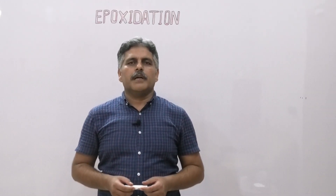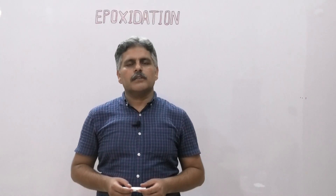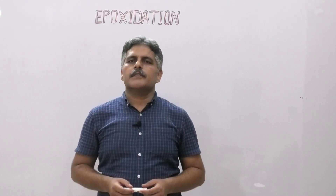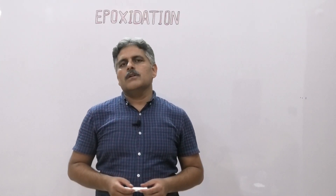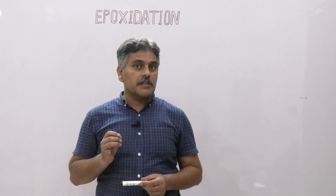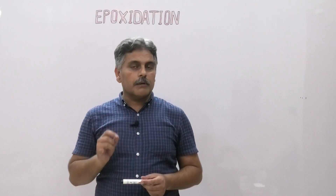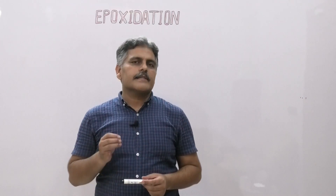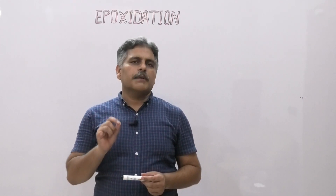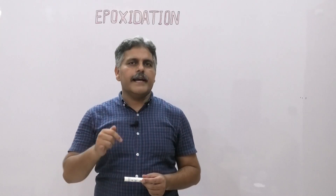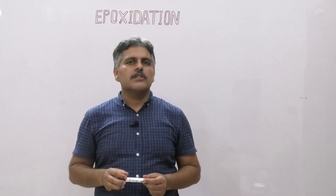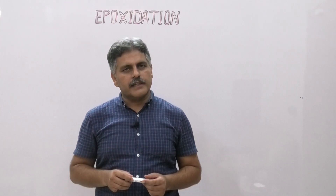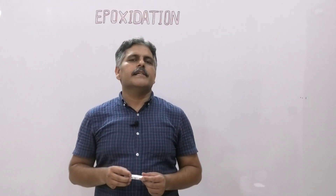Bismillahirrahmanirrahim, Asalamu Alaykum. I'm Dr. Muhammad Zaman Ashraf. Welcome to basic organic chemistry. Today our topic is epoxidation of alkenes. Epoxidation of alkenes is actually an oxidation reaction of alkenes. In case of epoxidation, the carbon-carbon double bond is converted into an epoxide. Epoxides are cyclic ethers. Because in this reaction oxygen is added at the carbon-carbon double bond, this reaction is known as an oxidation reaction.